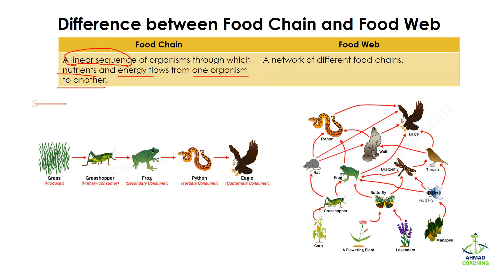The organisms are present at every step, and in this way nutrients — for example carbohydrates, proteins, and fats — as well as energy flow from one organism and move to another organism.